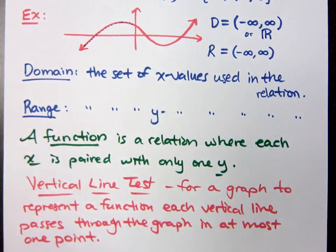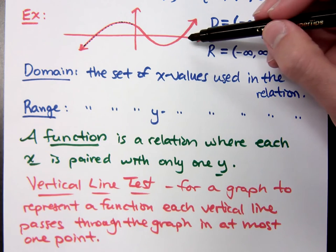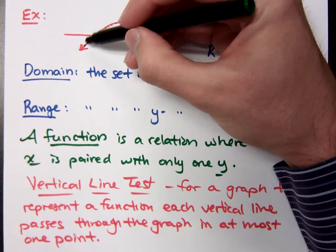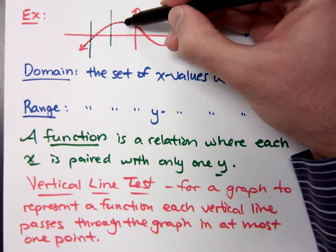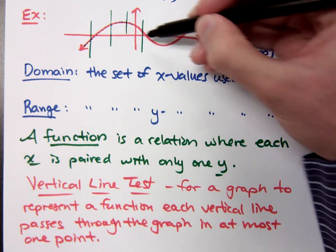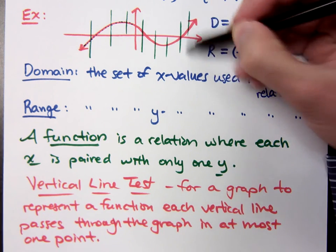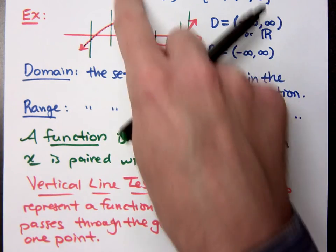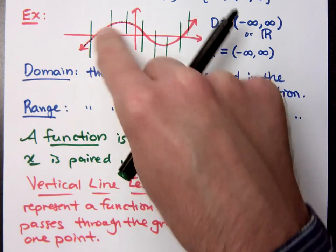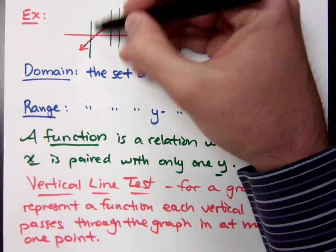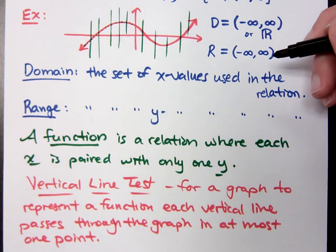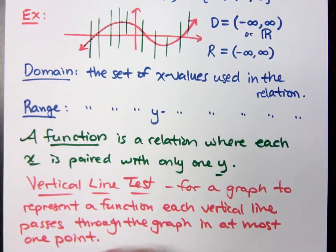So if I go back and look at this curvy guy up here, no matter where I draw a vertical line, how many points am I going through on that graph? I'm only crossing through one point, right? The axes are not part of the graph itself. It's this curve which is the graph. So every vertical line that I draw, how many points am I hitting? Just one. That's okay. If I were crossing through more than one point, then I would have something that's not a function.